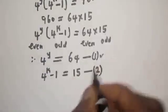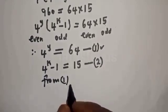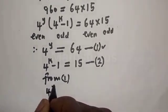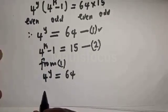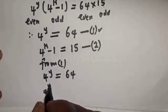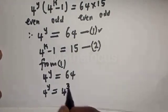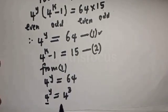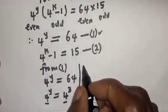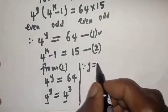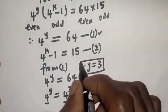Working with equation 1: 4 raised to power y equals 64. Since 64 is 4 raised to power 3, and they have the same base, therefore y is equal to 3. This is the value of y.